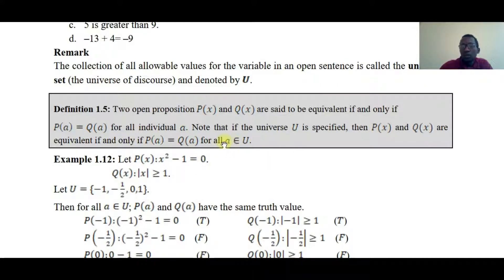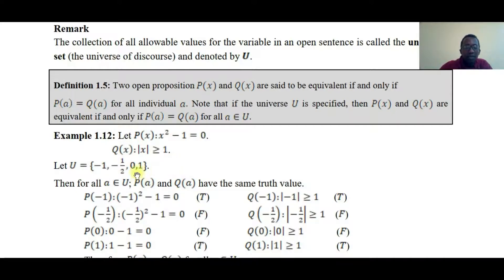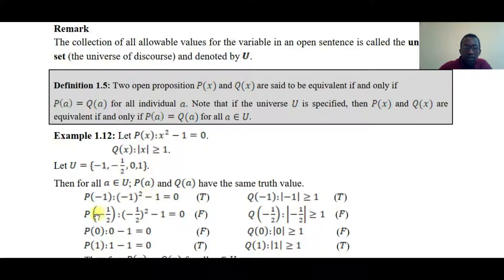Let p(x) equal x squared minus one equals zero, and q(x) equal: x greater than absolute value of x, or |x| greater than one. Let the universal set U be {−1, −1/2, 0, 1}. For each element a of U, p(a) and q(a) should have the same truth values. For example, q(−1): −1 minus −1 minus... evaluating each element of U for both p and q.